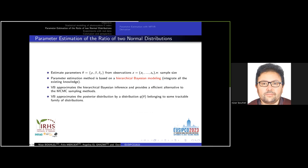We seek to estimate the parameters theta equals rho, beta, and delta Y from observation Z, where n is the number of the sample size. In this work, we propose a parameter estimation method based on hierarchical Bayesian modeling, which can investigate and integrate all the existing knowledge of the phenomenon to be studied. The variational Bayes is performed here to approximate the hierarchical Bayesian inference and to provide an efficient alternative to the MCMC Markov chain Monte Carlo sampling methods when parameters theta are high dimensional or fast computation is required. The variational Bayes approximates the posterior distribution by a distribution with a density q theta belonging to some tractable family of distributions.